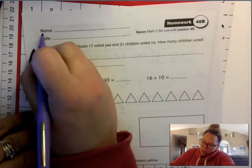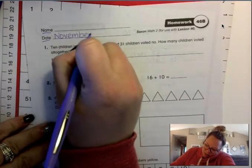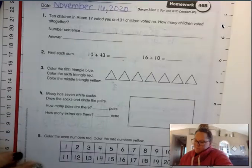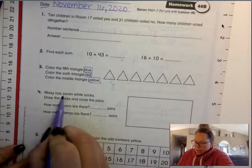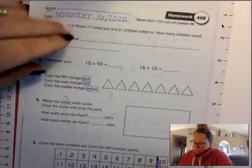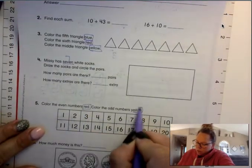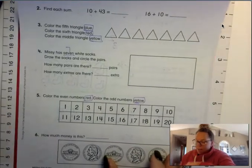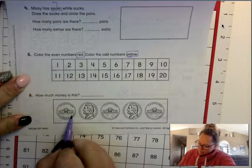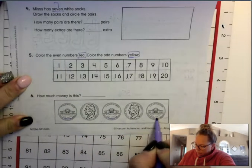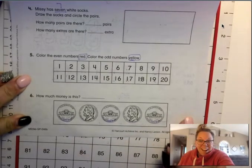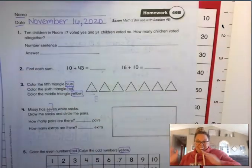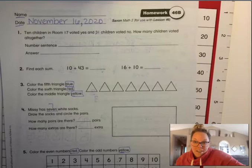Now friends, we did the front side together. The back side is for you. Don't forget your name and the date again, November 16th, 2020. You'll need your crayons for the back side to color some triangles. You'll need blue, red, and yellow. Seven socks, draw them and circle the pairs. You'll need red and yellow. For number five, you need to color the even numbers red and the odd numbers yellow. And then down here you're counting your money. Monticello, five cents. These are all five cents. See our former president on the front side? And Monticello on the back side. When you are done with this back side, then you are welcome to put that into your Monday folder, and you are done with math for today.